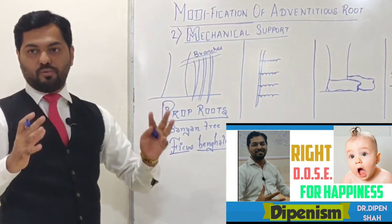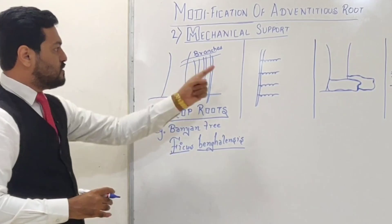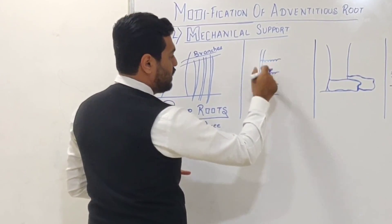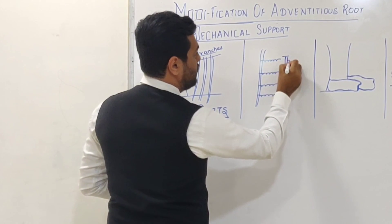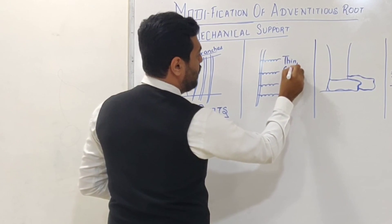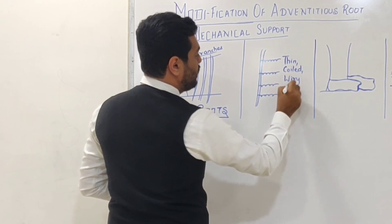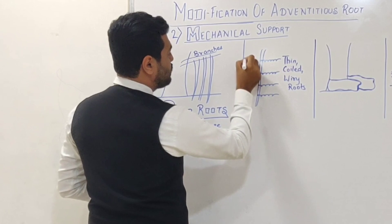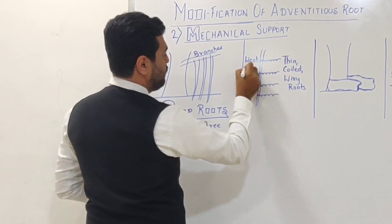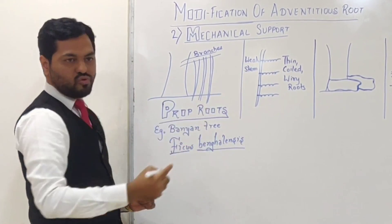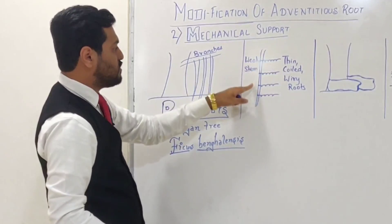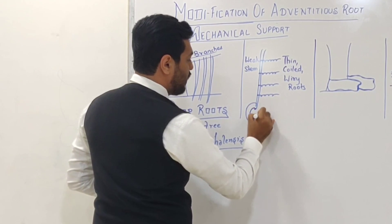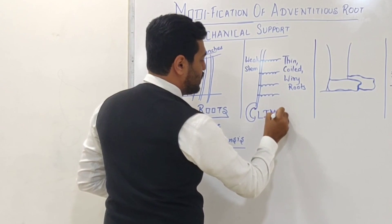The second type of root you can observe here — these roots are thin, coiled, and wire-like (wiry roots), and they arise from the nodes of a stem which is a very weak stem. This weak stem produces these thin, coiled, wiry roots for mechanical support, and such roots are called climbing roots — meaning they intertwine with some object and help the plant climb.